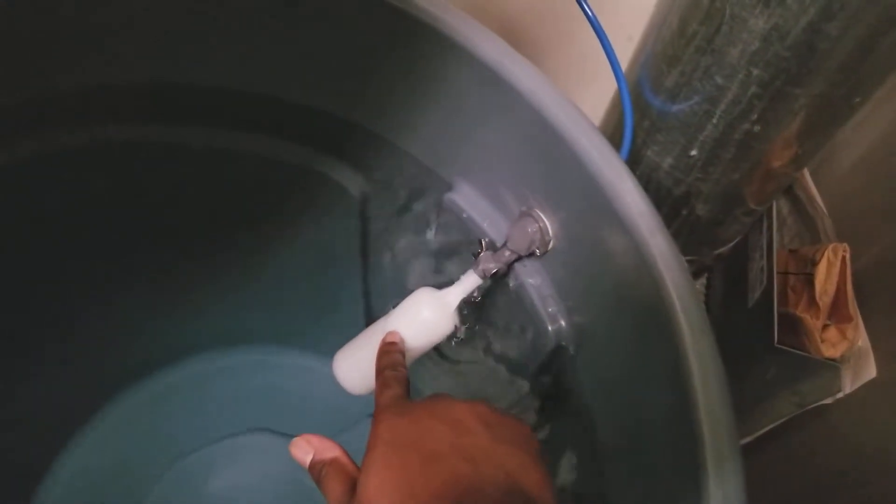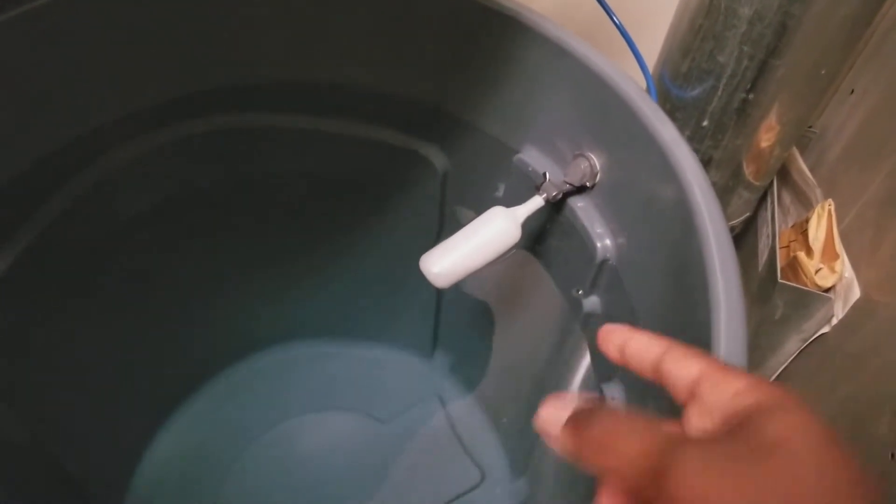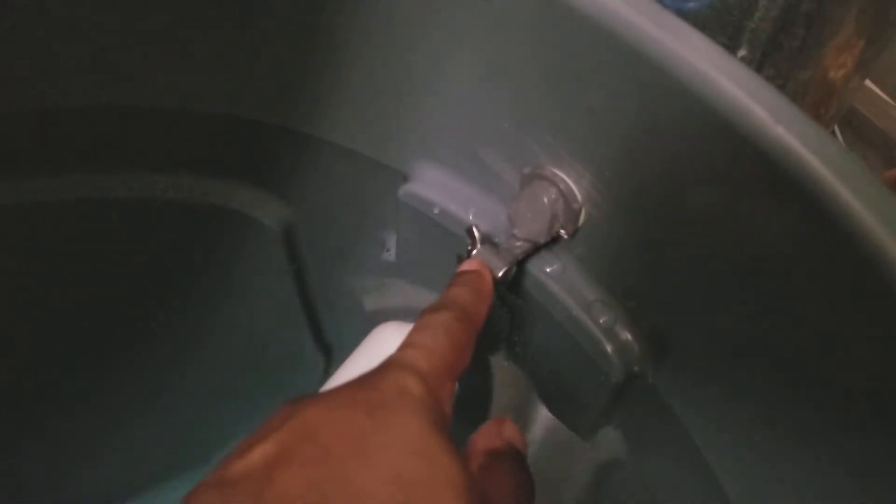If you get this setup, make sure you get a float valve, but not any float valve. You want to get a float valve that has this wing nut - the adjustable float valve - so you can set your water height. You can set the height how you want, so you can have it fill up more or less.